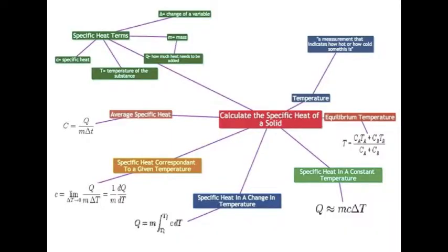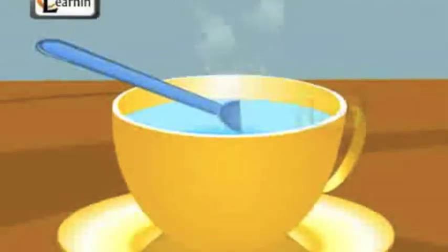Formulas. Equilibrium temperature, average specific heat, specific heat corresponding to a given temperature, specific heat in a change in temperature, specific heat at a constant temperature. Where delta equals change of a variable, M equals mass, Q equals how much heat needs to be added, T equals temperature of the substance, and C equals a specific heat.